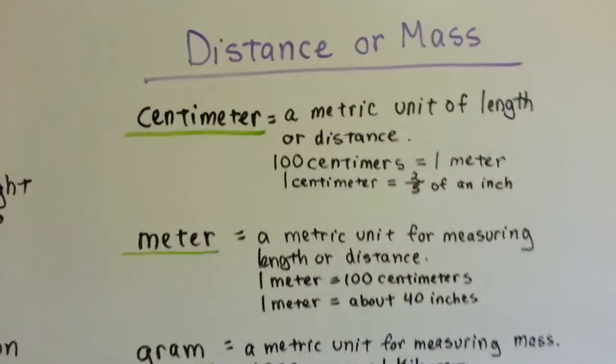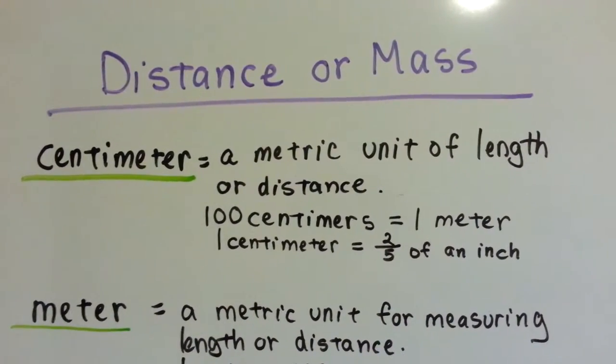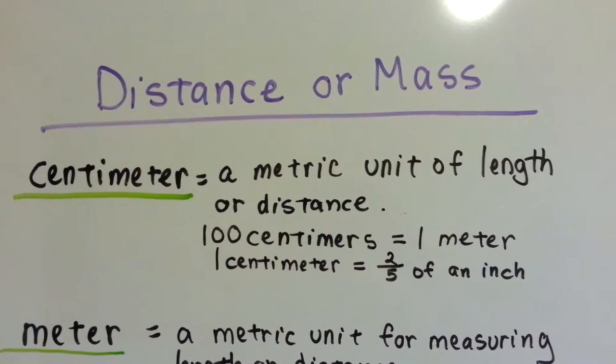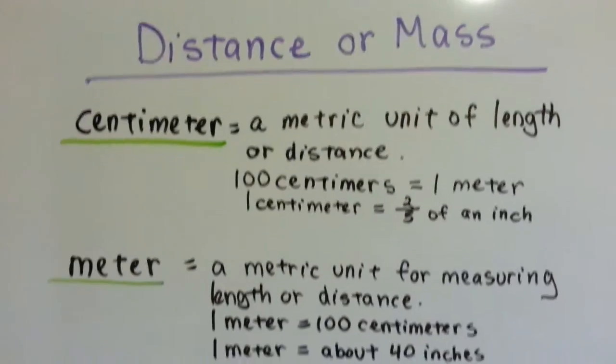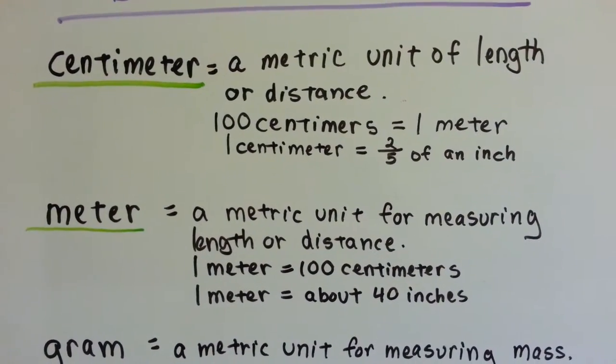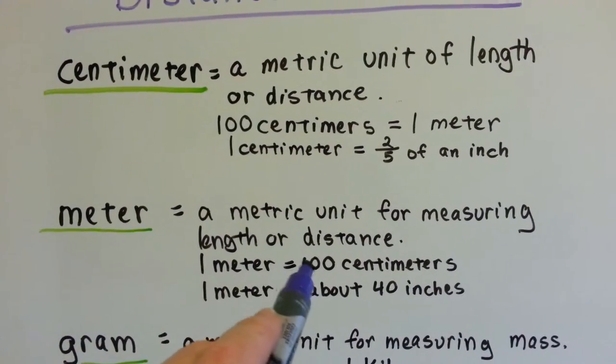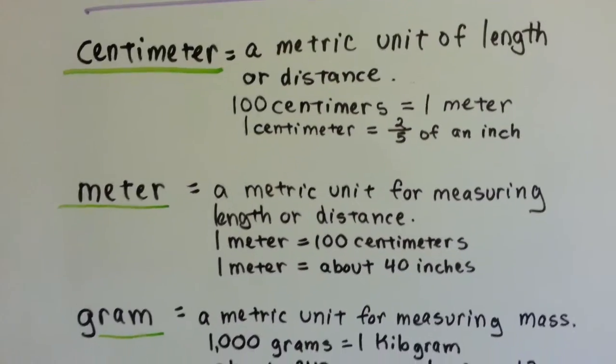Review on centimeters. They're a metric unit of length or distance. There's 100 centimeters to each meter. One centimeter is about two-fifths of an inch. So it's almost a half of an inch. A meter is a metric unit for measuring length or distance. And again, one meter is 100 centimeters. One meter is about 40 inches.